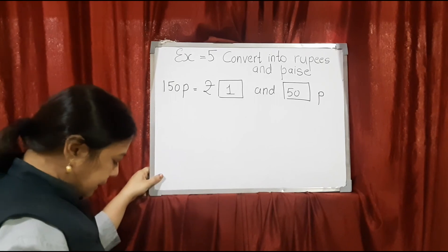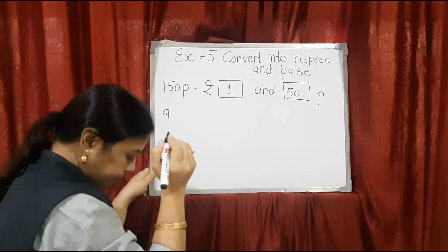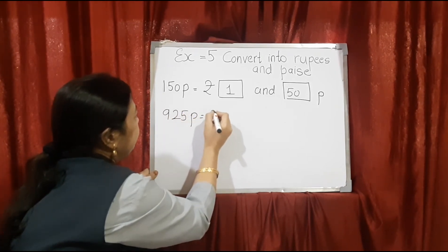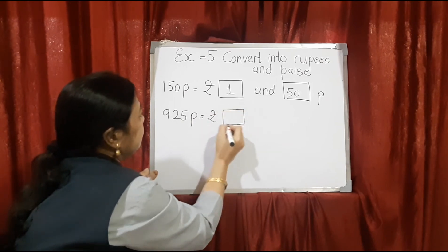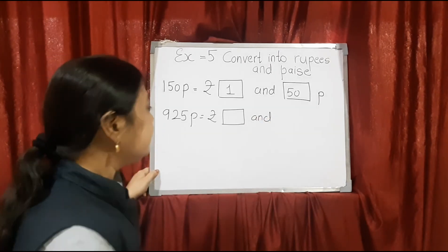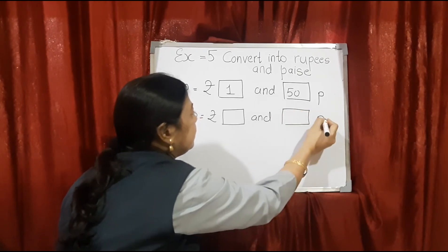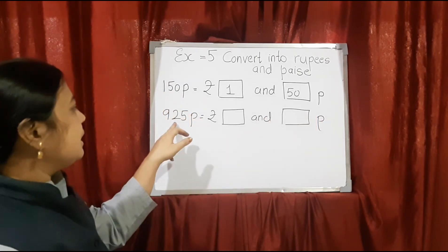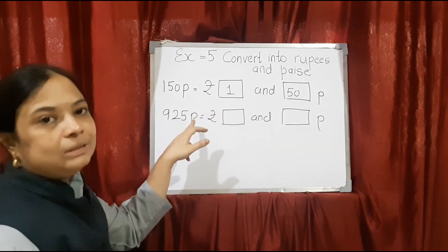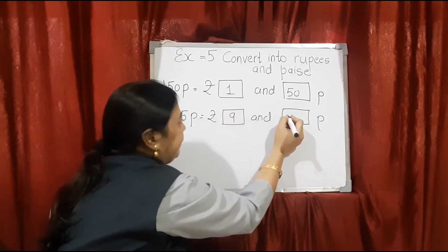Some more examples from the exercise: 925 paise. As I told you, the last 2 digits refer to paise and whatever is left is of rupees. So the last 2 digits are 25 — that is paise — and this is rupees. So here we write 9 rupees and 25 paise.